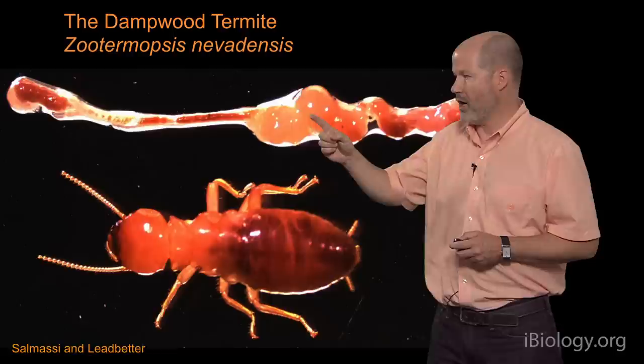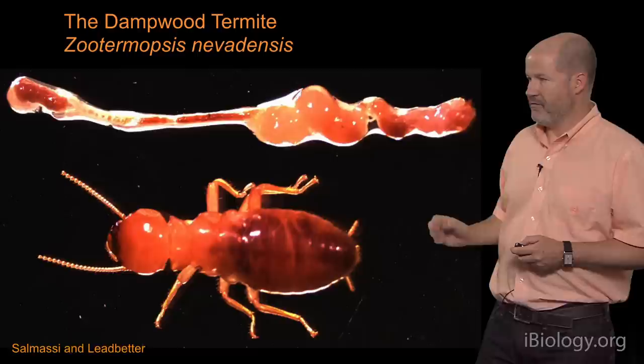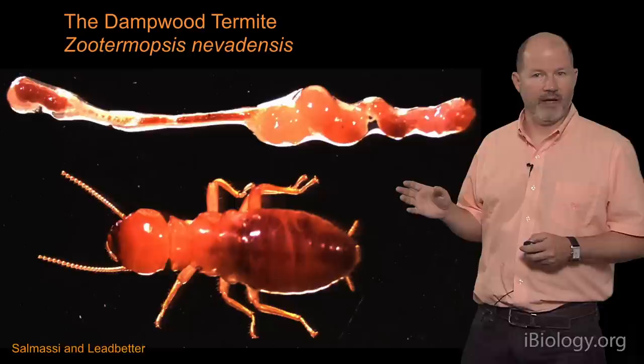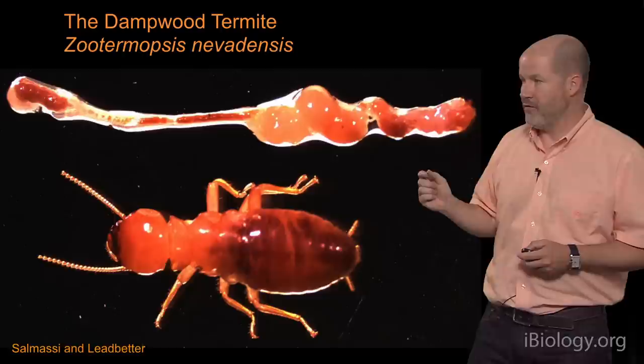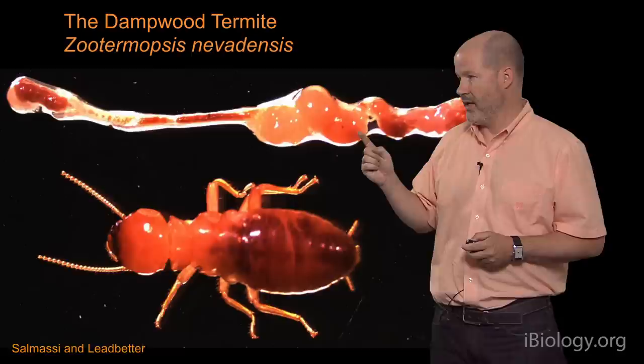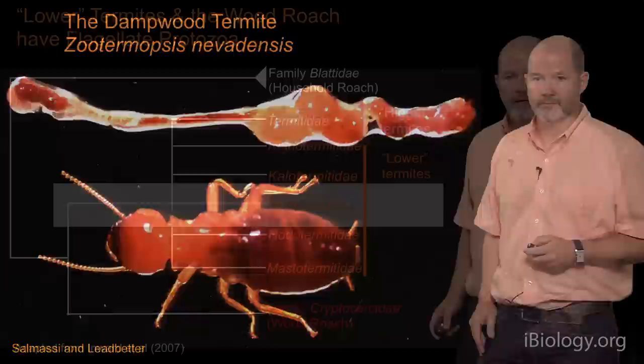It's in this paunch that you find a lot of things that excite microbiologists. You find a density of microbes found nowhere else in nature, and they represent all three domains of life — the archaea, the bacteria, and the eukaryotes. You find single-celled relatives of all three of those groups comprising hundreds of species in this hindgut paunch.